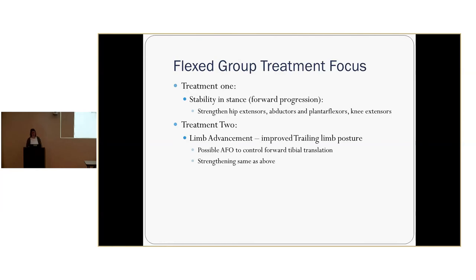For her treatment, addressing stability in stance and forward progression means strengthening her hip extensors, abductors, plantar flexors, and knee extensors to help progress her body through stance phase and prevent contralateral limb drop so she can get a nice contralateral step length. Treatment two focuses on limb advancement — improve trailing limb posture. Maybe an AFO to help control that forward tibial translation. She's a good example where an AFO during stance phase could help straighten out her knee a little more and help progress her through gait, setting up better trailing limb posture. Strengthening, same as above, to help with limb advancement.